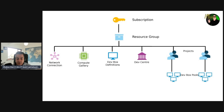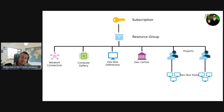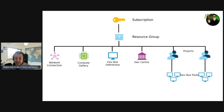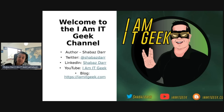This diagram gives a bit more insight into those different levels. At the top we have the subscription level, underneath that is the resource group, and under the resource group you have all the resources: network connection, compute gallery, dev box definitions, dev center, and projects. Permissions set at the resource level do not inherit downward — for example, permissions assigned at the project level will not filter down to dev box pools, which are also resources and need their own permissions assigned.